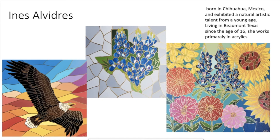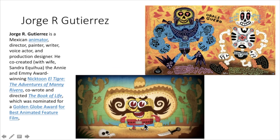This is Inez Alvidrez. She was born in Chihuahua, Mexico, and at a young age moved to Beaumont, Texas, where she continues to live and work. She's still around — she's not that old. She works mostly in acrylics, and I really like how her art looks kind of like stained glass even though it's painted. She's got some really interesting stuff going on.